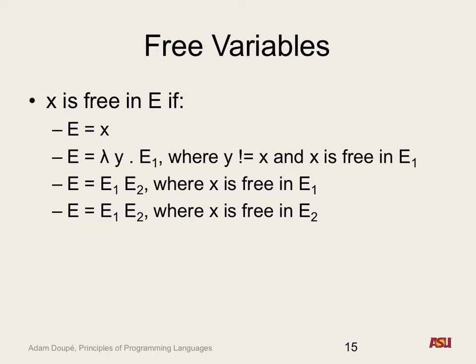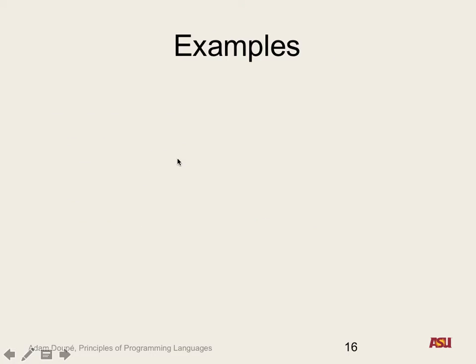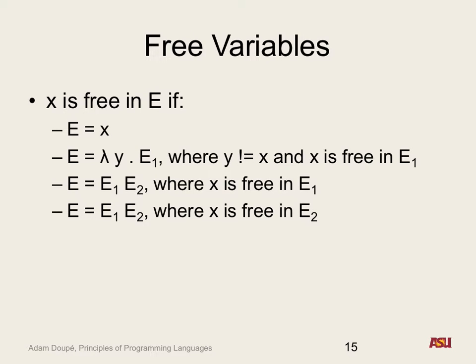Basically, an application doesn't change anything in terms of free variables — all we care about are abstractions. We can only say yes if inside of an abstraction the meta variable is not the same thing as the variable we're interested in. Otherwise we just say it's not free. This is just a formal definition of our intuition about what it means to be a free variable.